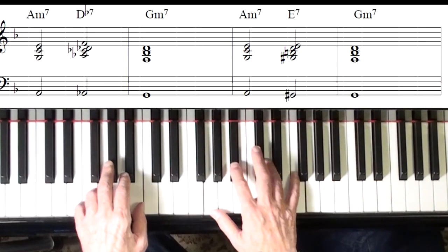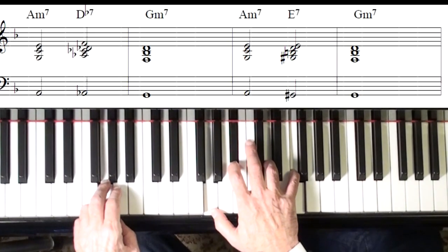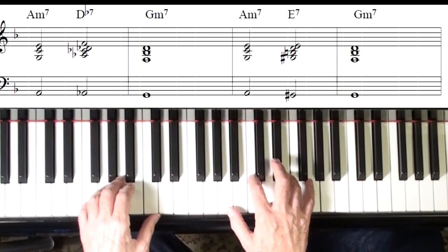All right, that was D flat. And that was E seventh, both seventh chords. And where did these come from?